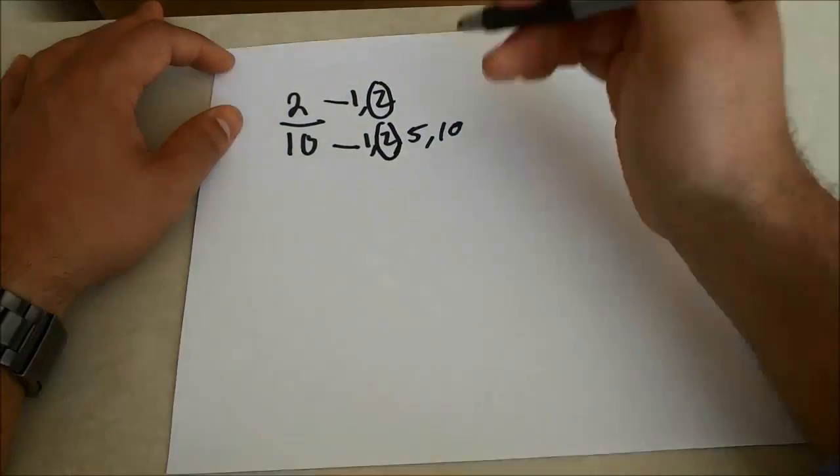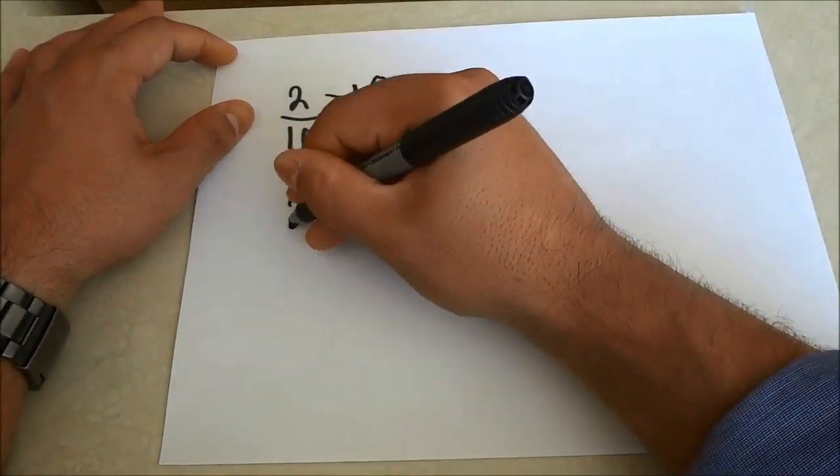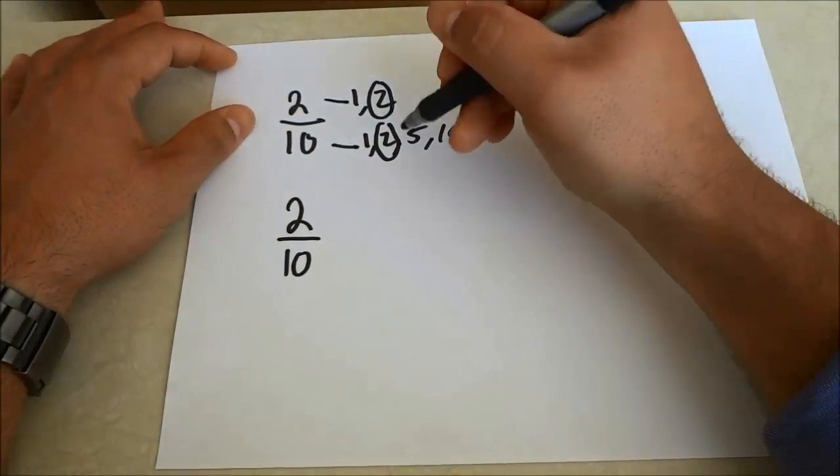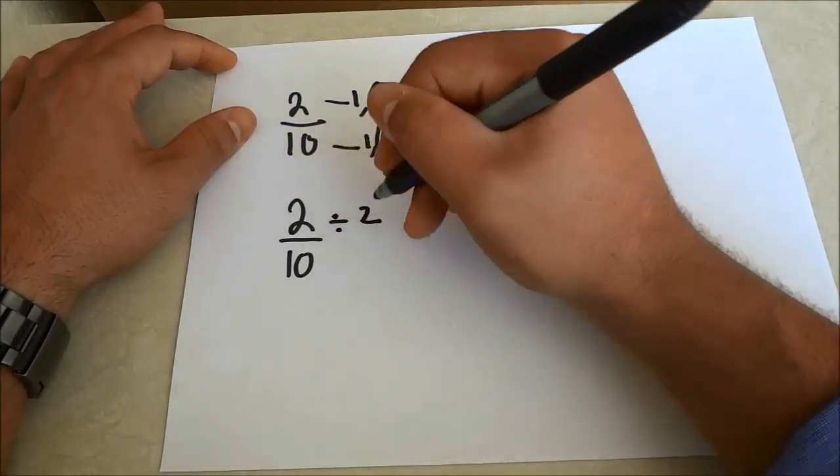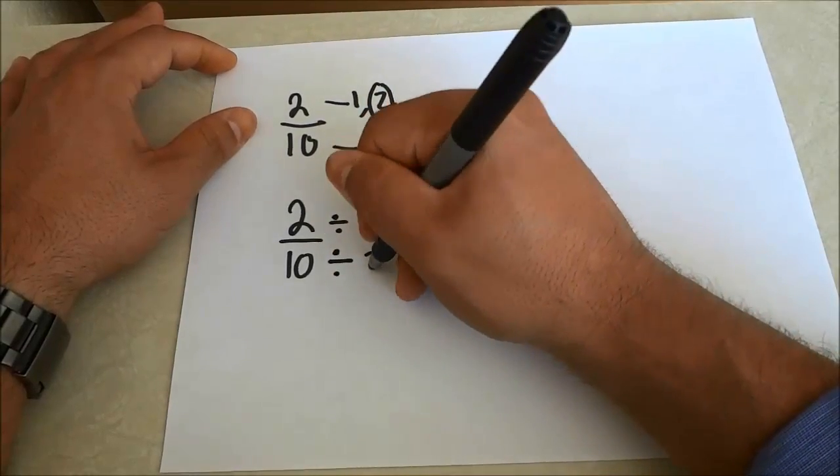So we once again have to take the 2 over 10 and divide it by the greatest common factor, which is 2. So we're going to divide the 2 by 2 and we're going to divide the 10 by 2.